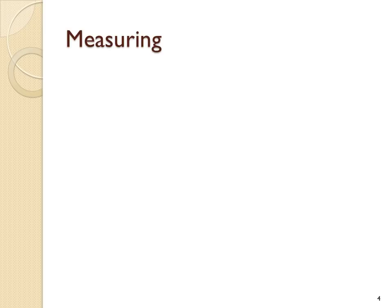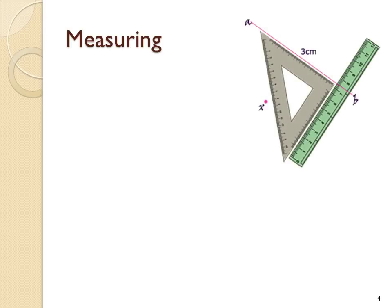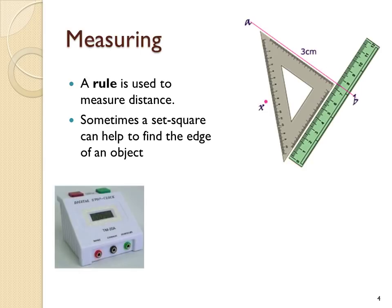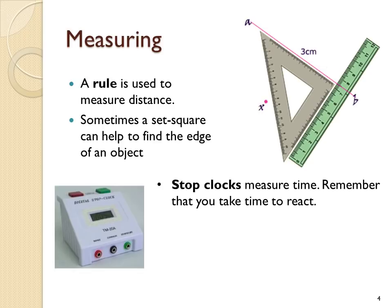Topic one covers some simple measurement concepts. You use a rule to measure distance, and a set square can help you get a straight edge aligned with a ruler for more accuracy. You can use a stopwatch or stop clock to measure time, but don't forget about your reaction time when pressing the button — it could be about 0.2 of a second, more or less depending on circumstances.